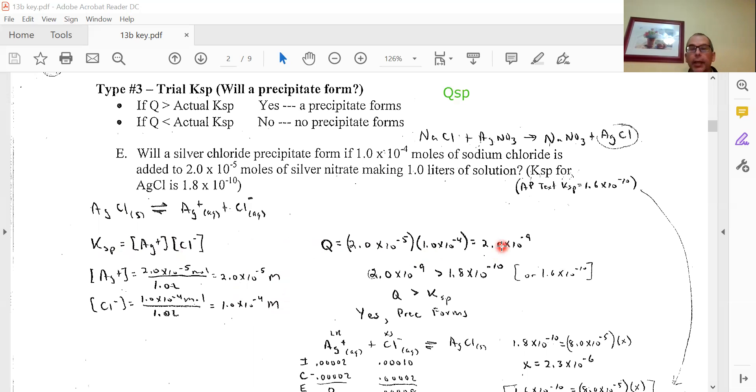but it is still bigger than the actual Ksp value. If Q is bigger than Ksp, you have too much product, some of the products will go back to reactants forming solid. If it forms solid, yes, a precipitate will form.